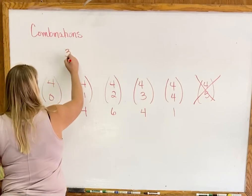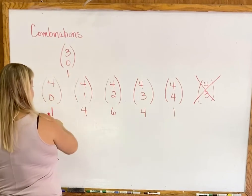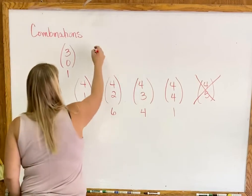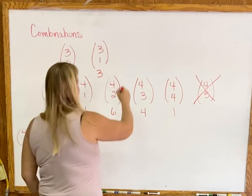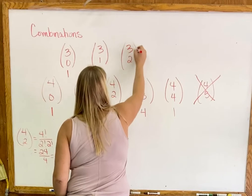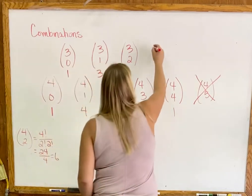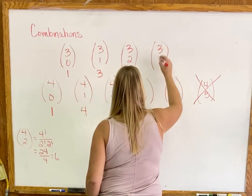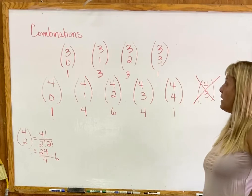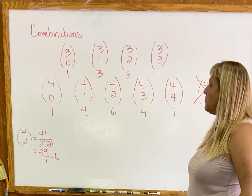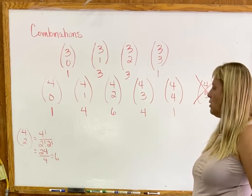Going up a level: 3 choose 0 = 1, 3 choose 1 = 3, 3 choose 2 = 3 (numbers one apart), and 3 choose 3 = 1. So the answers are 1, 3, 3, 1. And for fours it was 1, 4, 6, 4, 1. Are you seeing any pattern here?